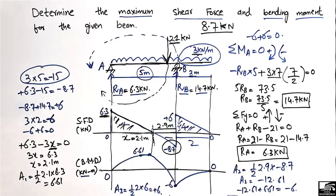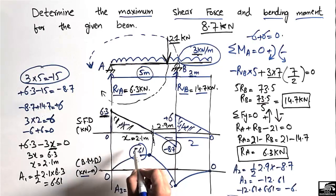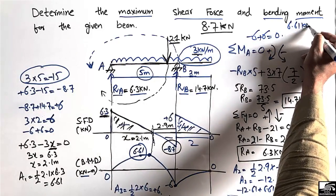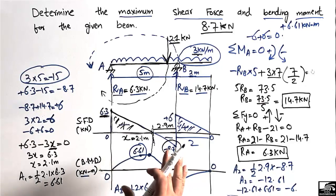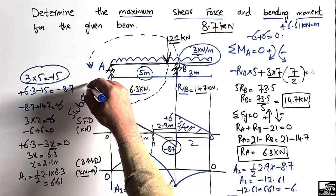The maximum bending moment occurs at 2.1 meters from point A and has a value of 6.61 kN·m. This is the maximum bending moment for the given beam. I hope you understand how to find the maximum shear force and maximum bending moment for any beam. Don't forget to subscribe to our channel. Thank you for watching.